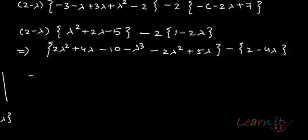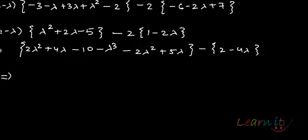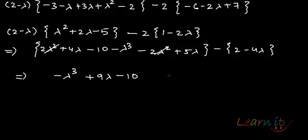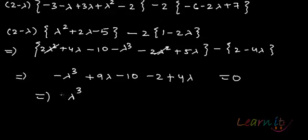Simplifying — the 2 lambda squared cancels with minus 2 lambda squared — what remains is: minus lambda cubed plus 9 lambda minus 10 minus 2 plus 4 lambda. This equals 0, which implies lambda cubed minus 13 lambda plus 12 equals 0.